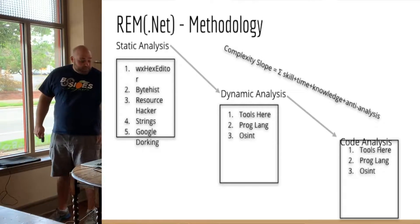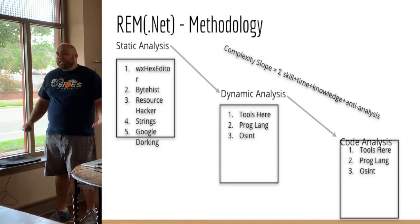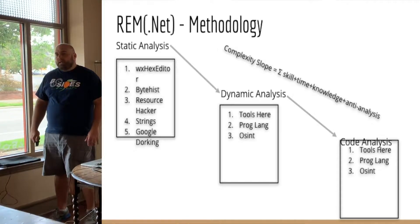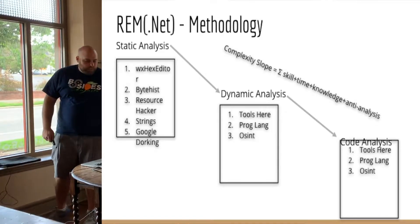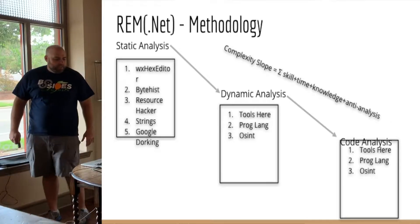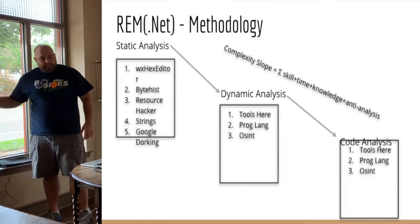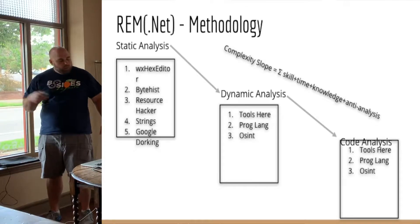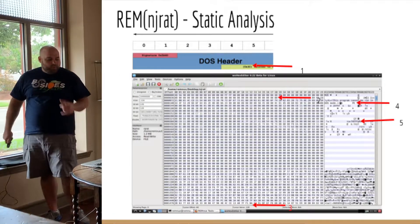Now we're going to look at a .NET sample — I believe it's written in C#. We see the complexity scope — we're only doing static analysis. What can we get on this sample?